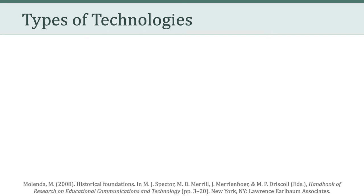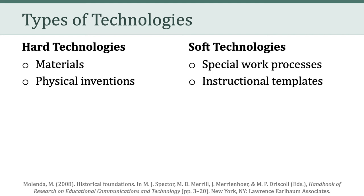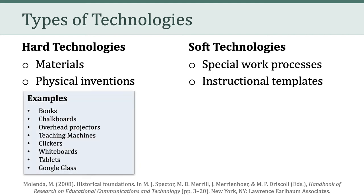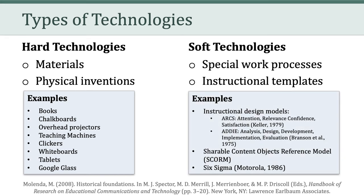Broadly speaking, educational technologies fall into two categories: hard technologies and soft technologies. Examples of hard technologies can be physical things such as books, chalkboards, interactive whiteboards, tablets, and virtual reality. Examples of soft technologies are processes or templates, and these might be instructional design models, or certain standards such as shareable content objects, or the Six Sigma process. So those are two ways of categorizing educational technologies.